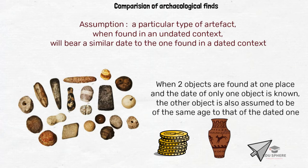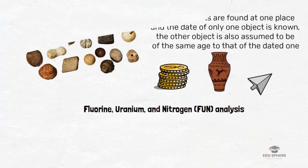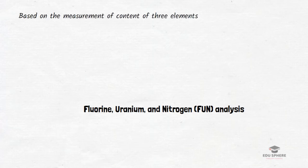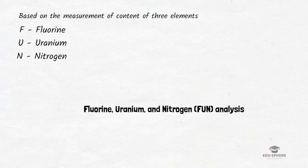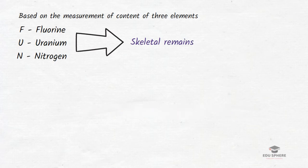Next is fluorine, uranium, and nitrogen analysis — in short, FUN analysis. This so-called FUN dating method is based on the measurement of the content of three elements — fluorine, uranium, and nitrogen — in samples of studied bones. This relative dating method is based on the fact that there are certain specific progressive chemical changes in skeletal remains that are buried underground.